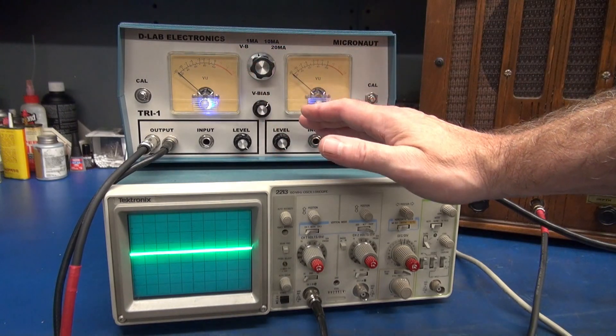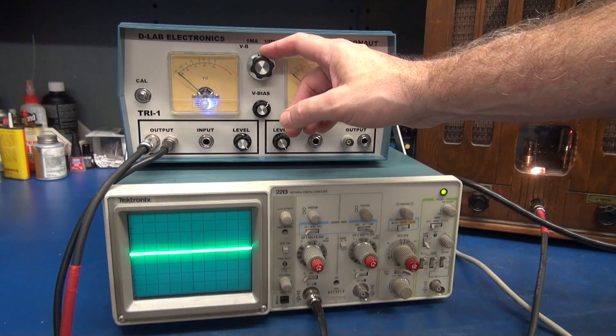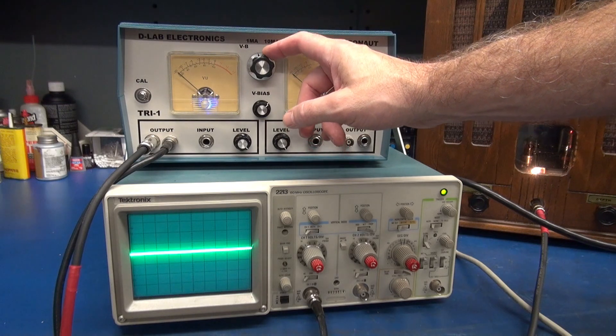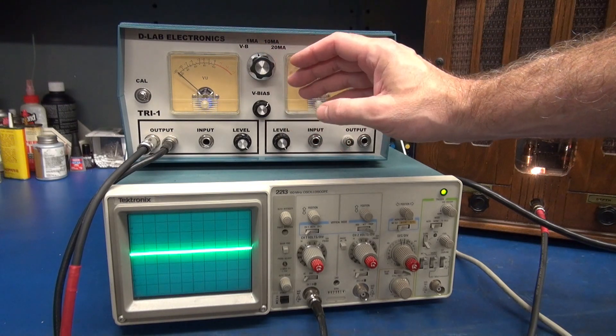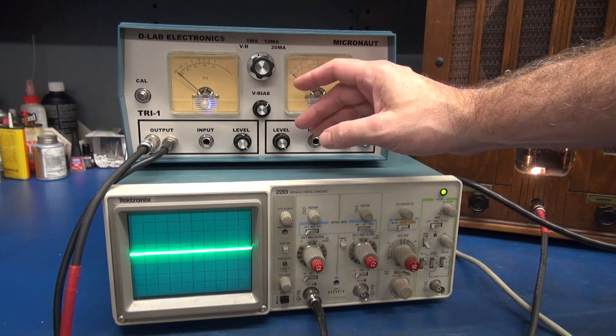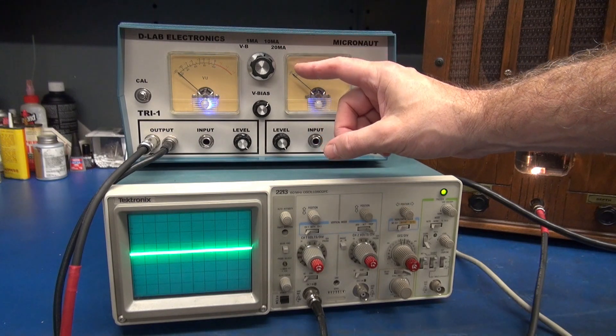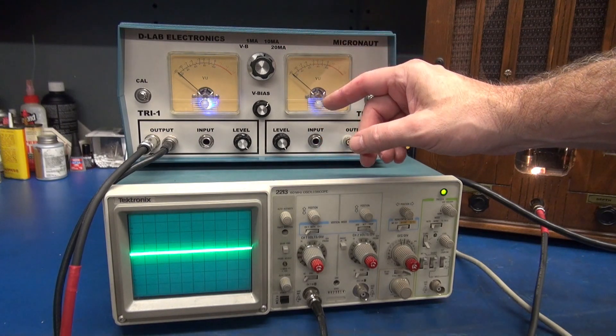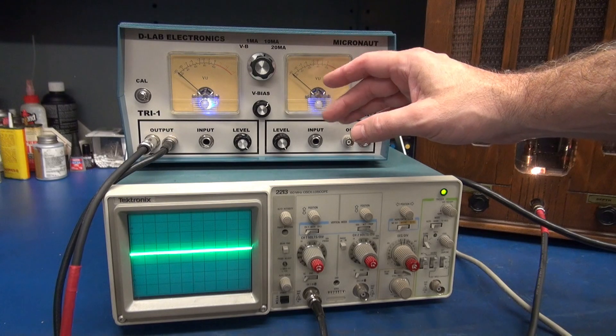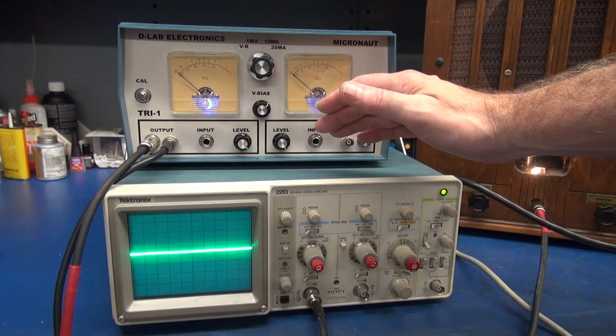Rather than calling out the tubes, I decided to put it in milliamp settings. So the one milliamp setting is for your 6AV6, 6BK6, 6SL7, and 12AX7. The 10 milliamp is for the 6AT6, 6SN7, and 12AT7. And the 20 milliamp is for a 12AU7.